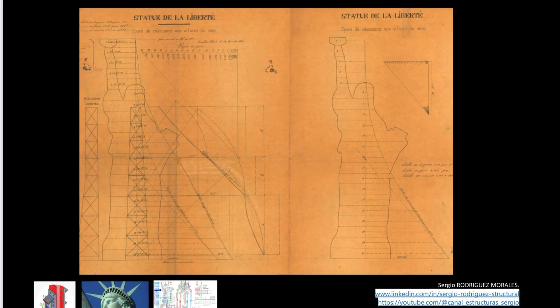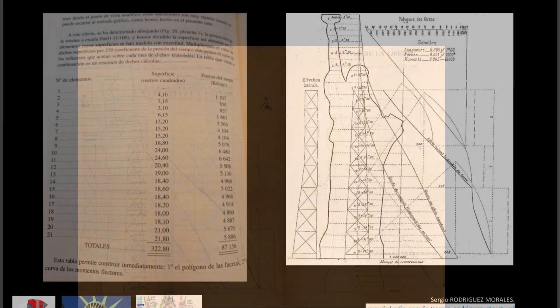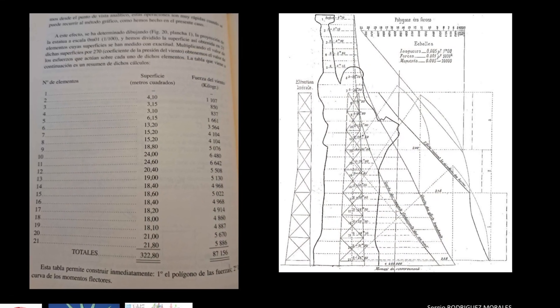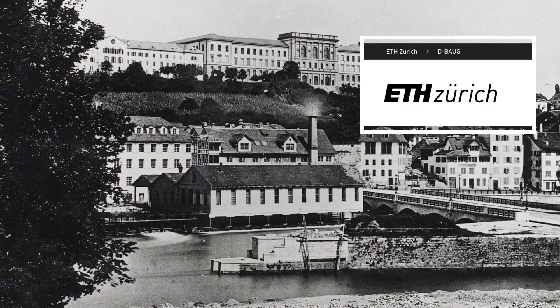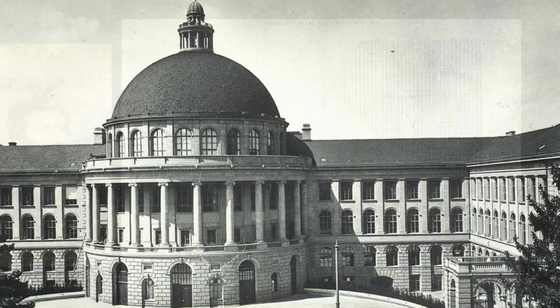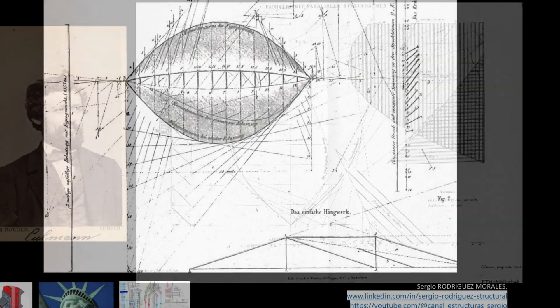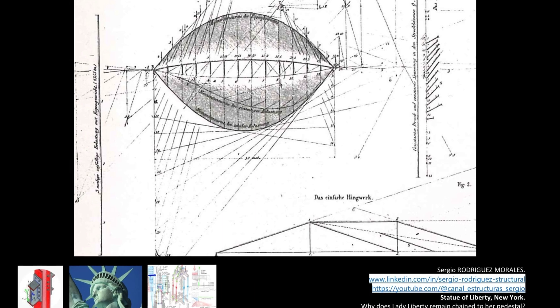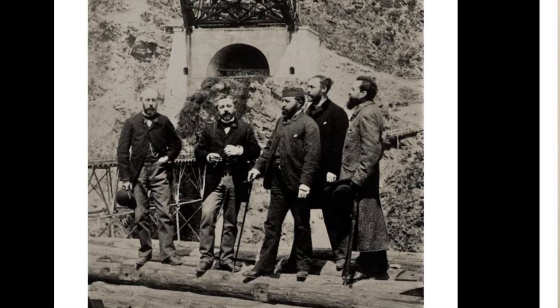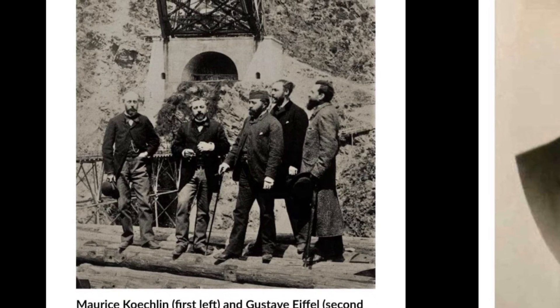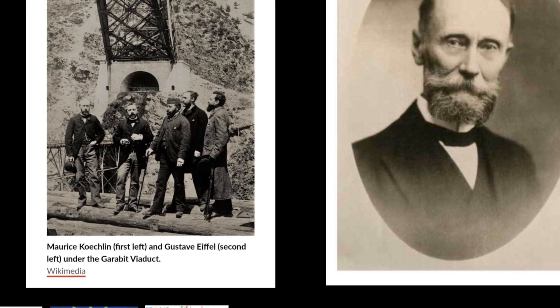However, the entire structural design was the responsibility of the head of the technical office at Eiffel's company, the little-known but outstanding Swiss engineer Maurice Koechlin. Educated at ETH Zurich, Maurice was a disciple of Carl Culmann, who not only taught him graphic statics but also brought him a letter of recommendation that led to his employment by Gustav Eiffel. Without the silent work and unwavering dedication of Maurice Koechlin, Eiffel would not be recognized internationally as he is today.